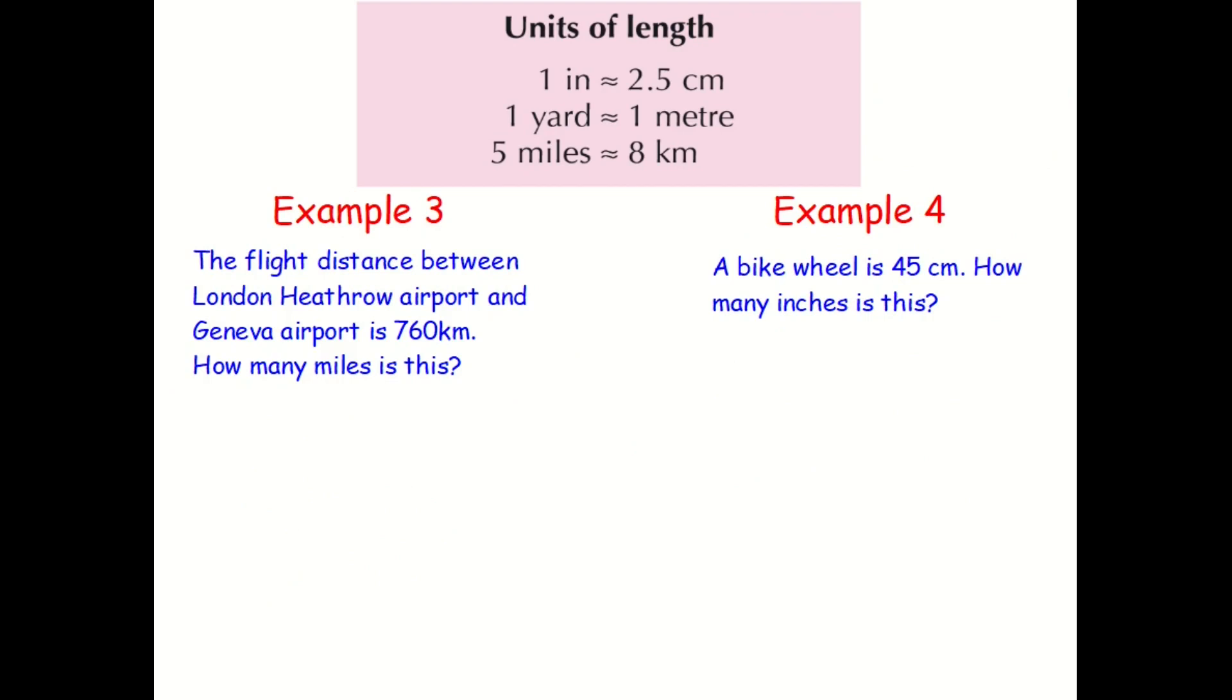Okay, example three. It says the flight distance between London Heathrow Airport and Geneva Airport is 760 kilometres. How many miles is this? Well, let's put that really important conversion down, that five miles is approximately equal to eight kilometres. But this time, I'm trying to figure out how many kilometres. So I've got an unknown there. I don't know how many miles it is, but I know that it's 760 kilometres.